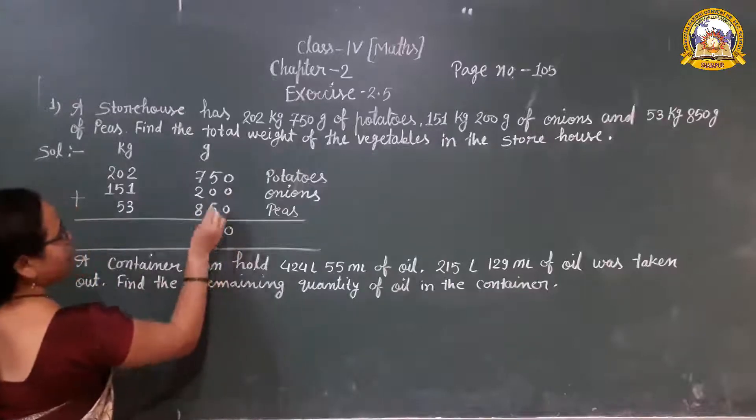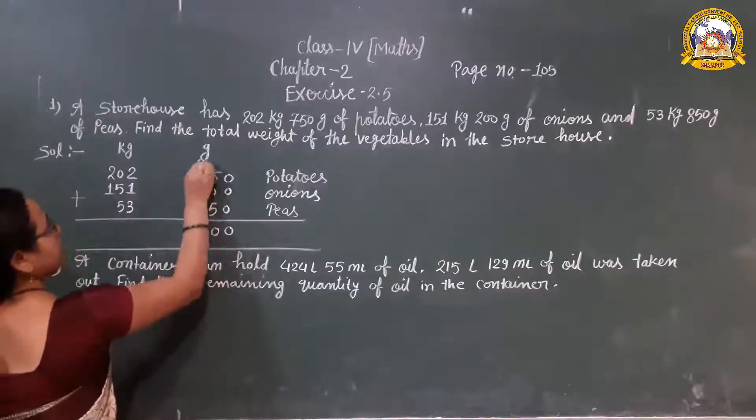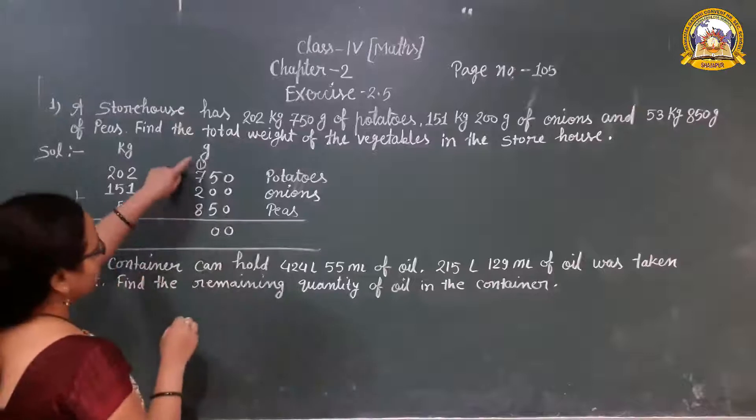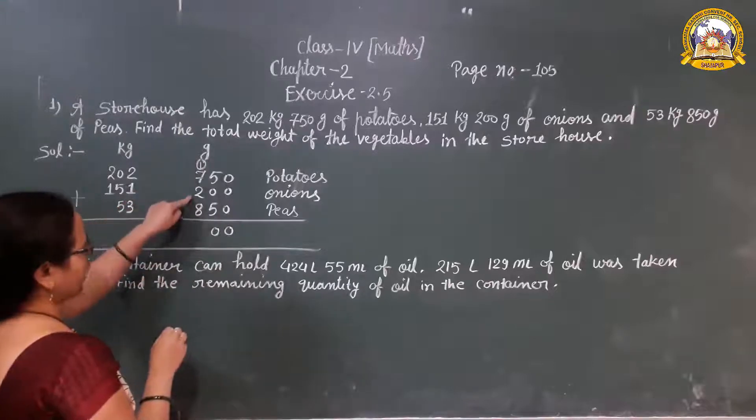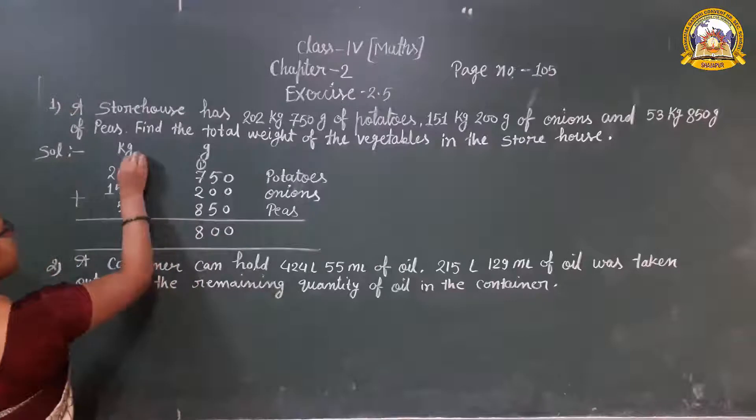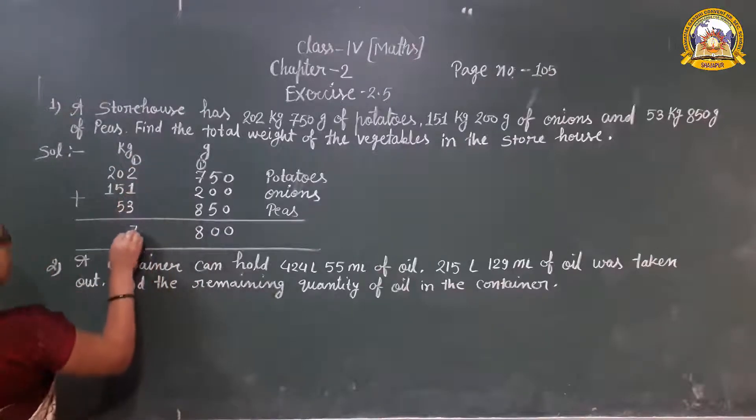Addition: 0, 5 plus 5 is 10, carry 1. 7 plus 1 is 8, plus 2 is 10, plus 8 is 18, carry 1. 2 plus 1 is 3, plus 3 is 6, plus 1 is 7.